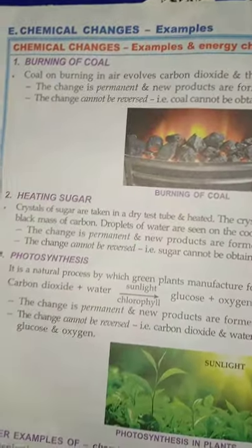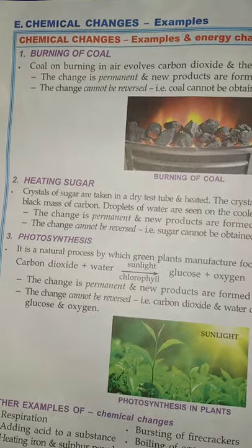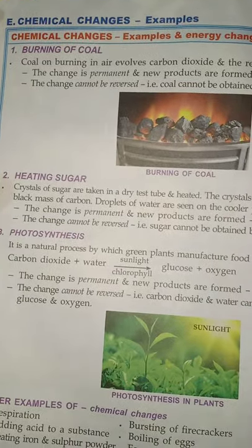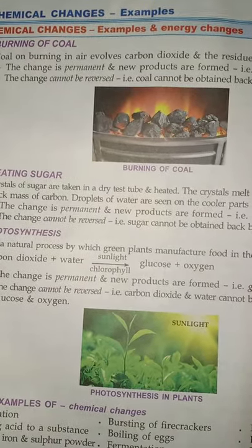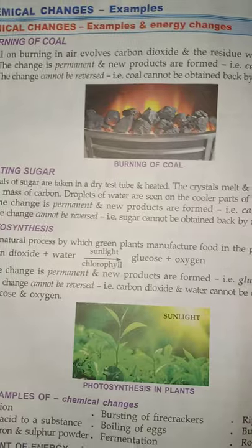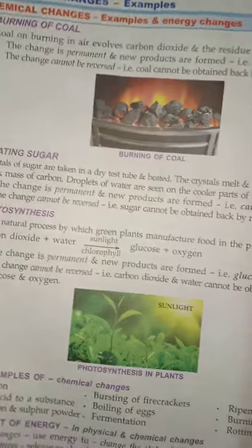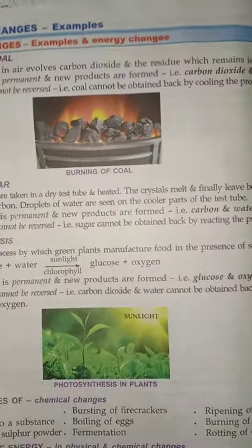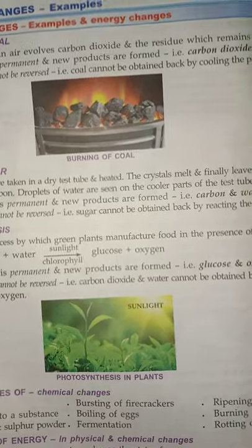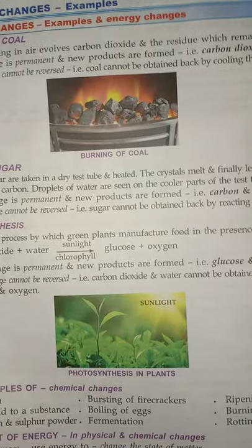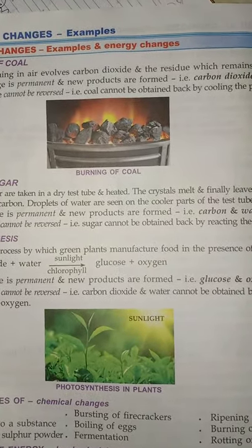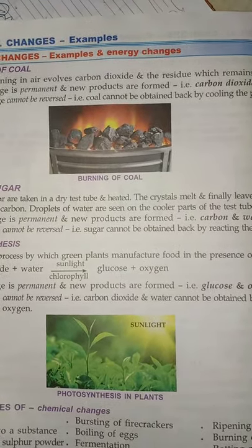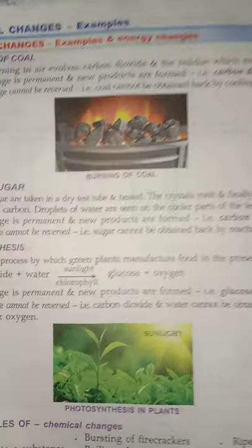For chemical change we have burning of coal. Whenever coal is burnt, it gives out carbon dioxide and water vapor with ash. This cannot be reversed by changing the conditions, so it is an irreversible and permanent change — it is a chemical change. The same goes for heating of ashwag.